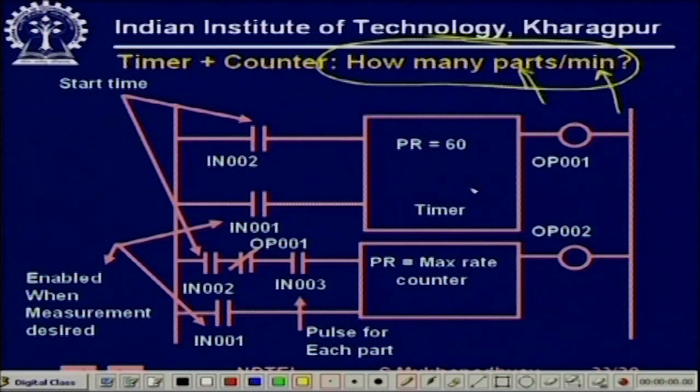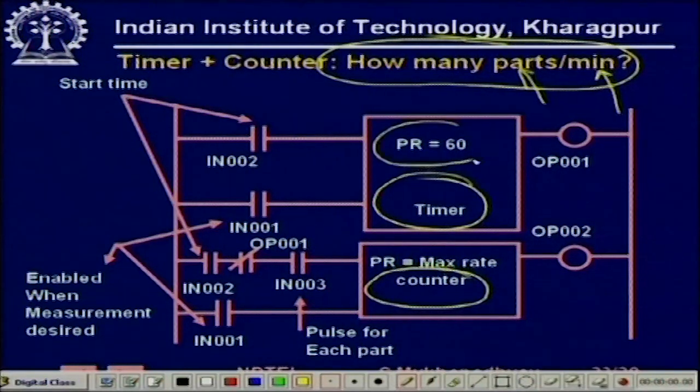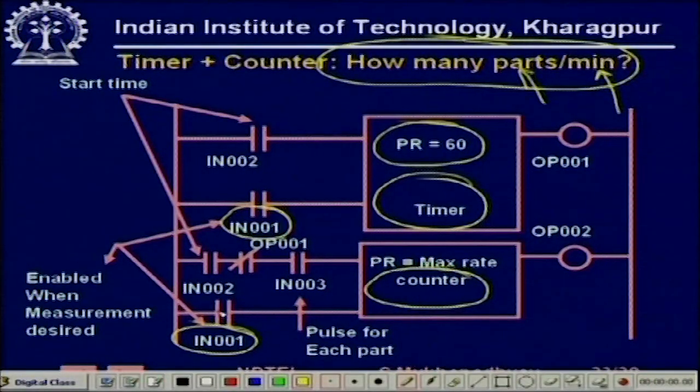Here we have the timer and here we have the counter. The timer is loaded to 60 because we are talking about minutes and the internal clock pulses are available at every one-second interval. IN001 is a switch you press when you want a measurement — to know over the next one minute how many parts pass. When the measurement desired contact is enabled, both the timer and the counter are enabled.